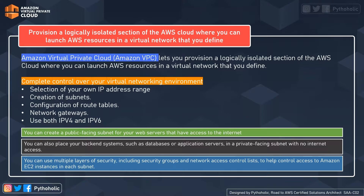If you wish to have it secured, you can also place your backend systems such as databases or applications in a private-facing subnet with no internet access, so that only you and your applications have access to these resources. And the security provisions don't stop there. With VPC, you get multiple layers of security with security groups and network access control lists, where you can protect both your instances and your subnets.